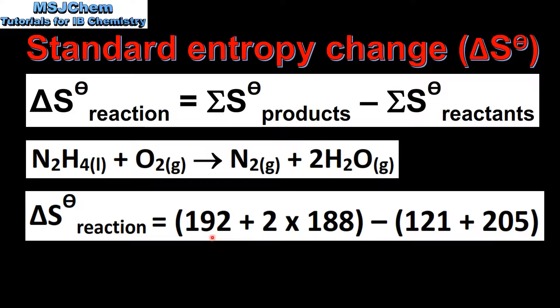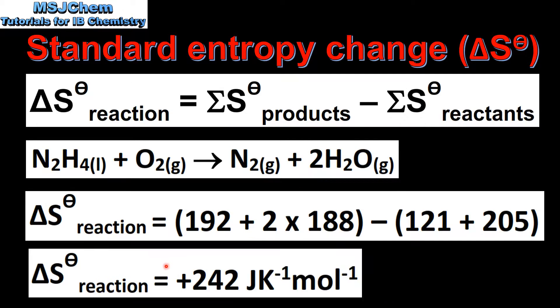Next I'll input the values into the equation. Notice I multiply the value for water by two because we have two moles of water. And when we do the calculation we get a standard entropy change of reaction of positive 242 joules per kelvin mole.